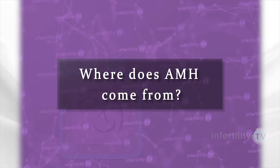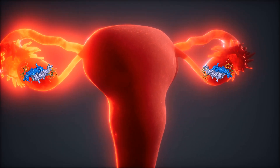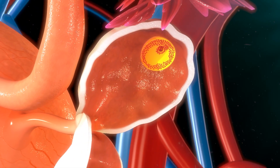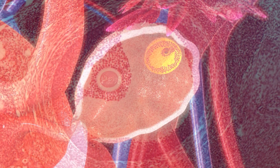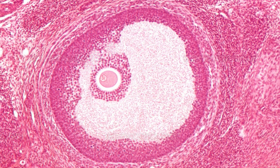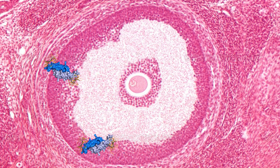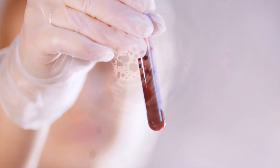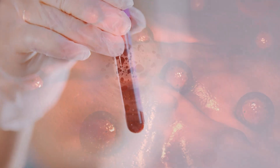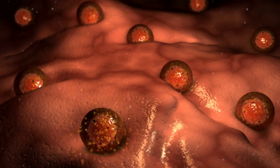Where does AMH come from? Most AMH is produced in the ovaries. Each egg in the ovaries is surrounded by a group of cells that make up a tiny cyst called a follicle. AMH is produced in the cells of these follicles. You can do a blood test to measure your AMH levels, and this number tells us about the number of eggs in the ovaries at that moment.